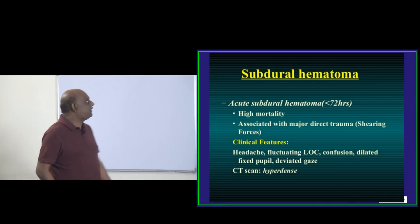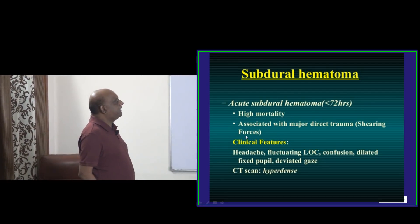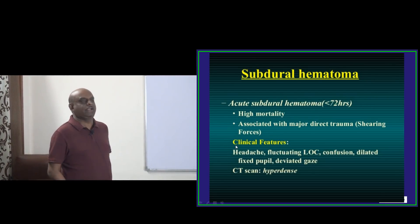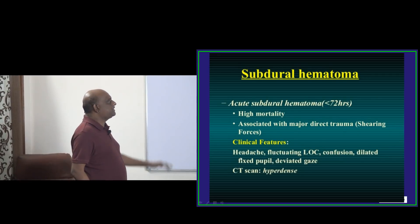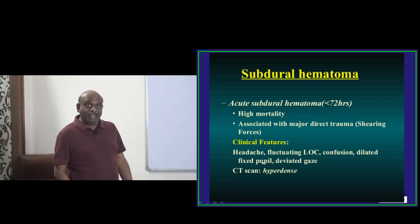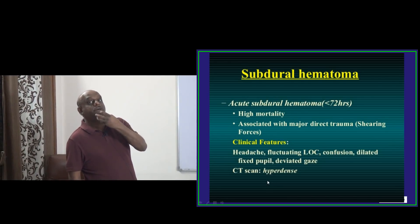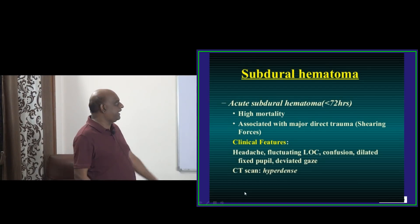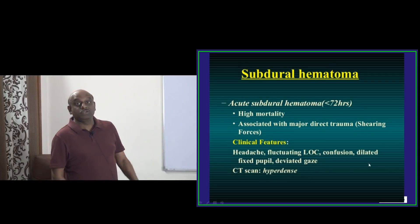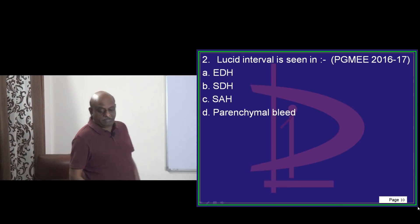Subdural hematoma carries high mortality. There is a shearing force leading to it. The patient will have fluctuating loss of consciousness, confusing headache, and because it is compressing the brain and mid-brain, the oculomotor structures are affected. The patient will present with a fixed, dilated pupil.